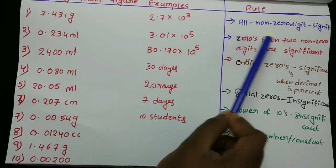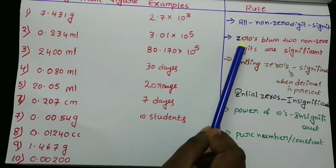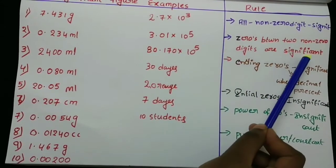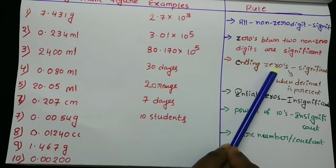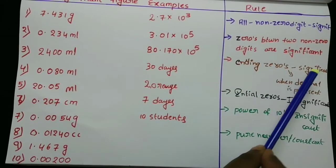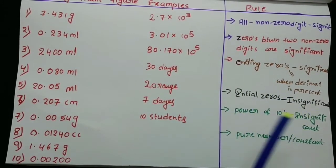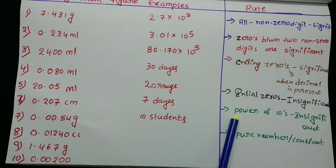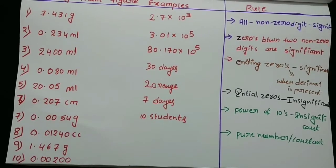The rules are: all non-zero digits are significant; zeros between two non-zero digits are significant; ending zeros are significant when a decimal is present; initial zeros are insignificant; power of tens is insignificant; pure numbers are constant; and infinite numbers are constant.